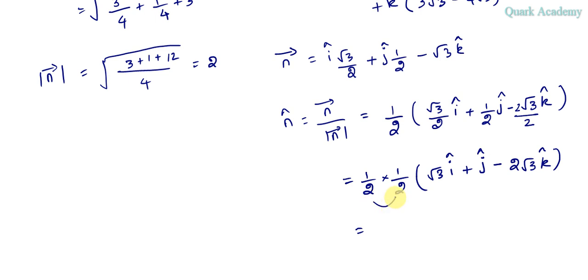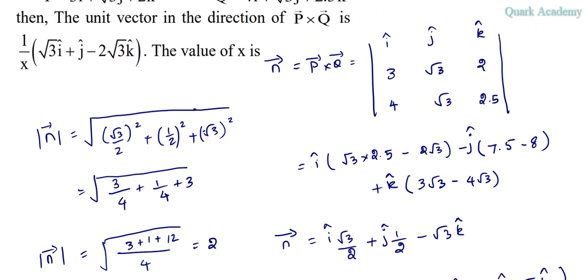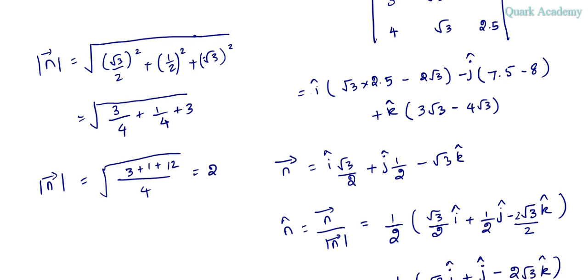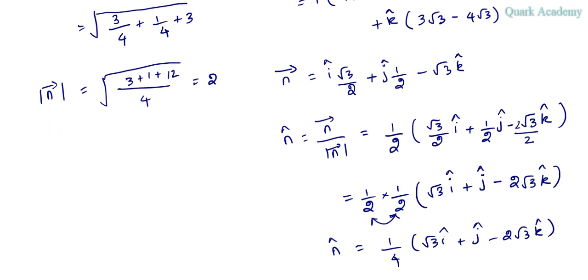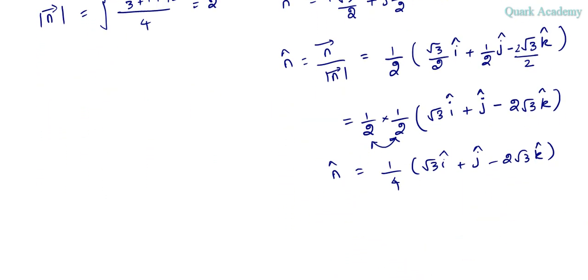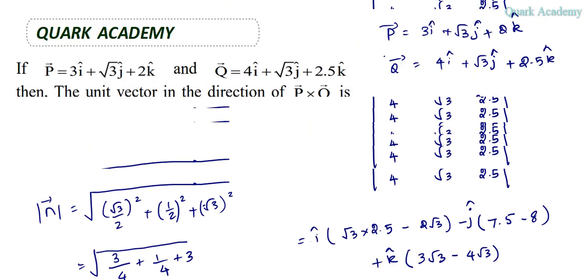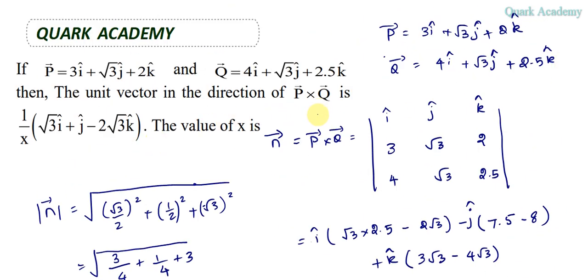So what is the x value you are getting? It's like 2 into 2 is 4, so we can write 1 by 4 root 3 i cap plus j cap negative 2 root 3 k cap. This will be the unit vector which is in the direction of P cross Q. So by comparing this unit vector and the one which they have given in the question, we can say the value of x is 4.